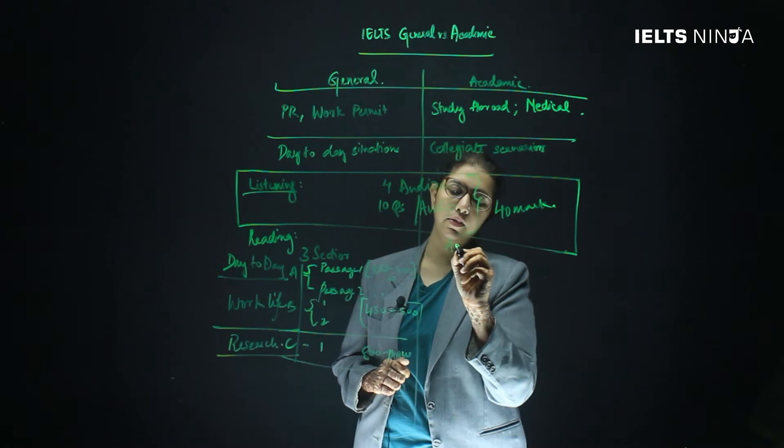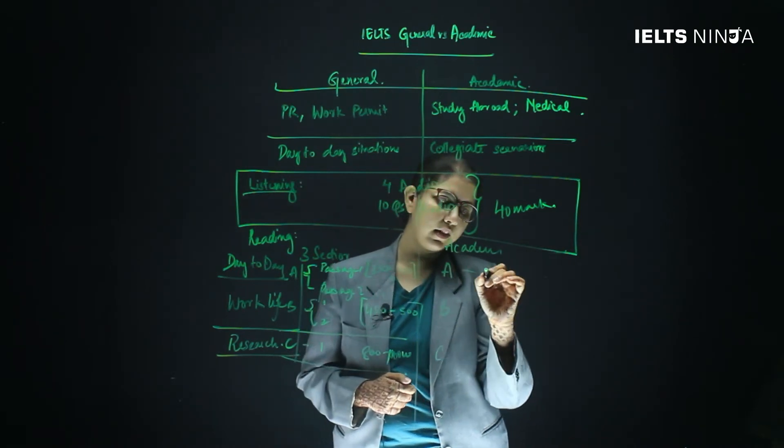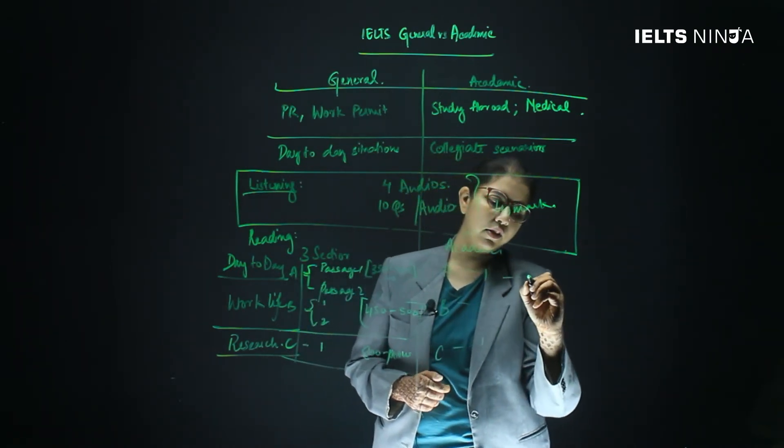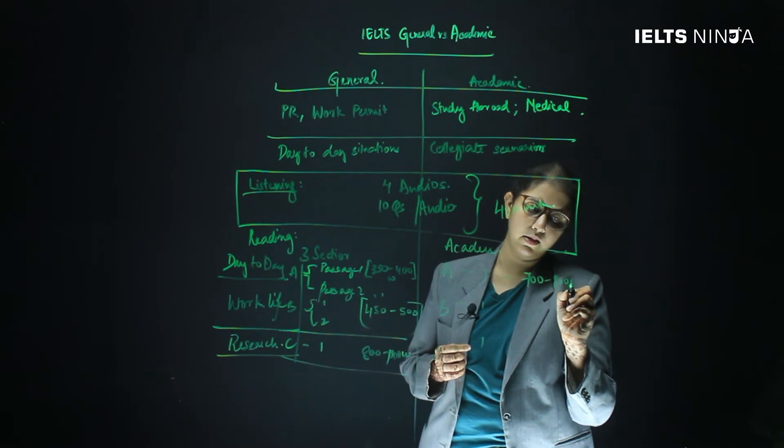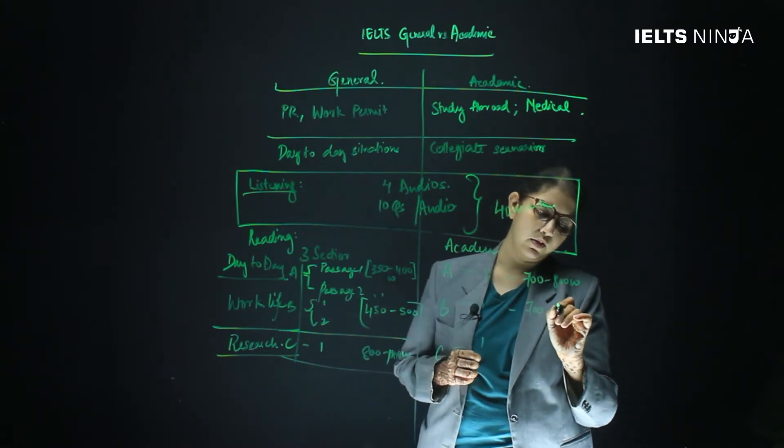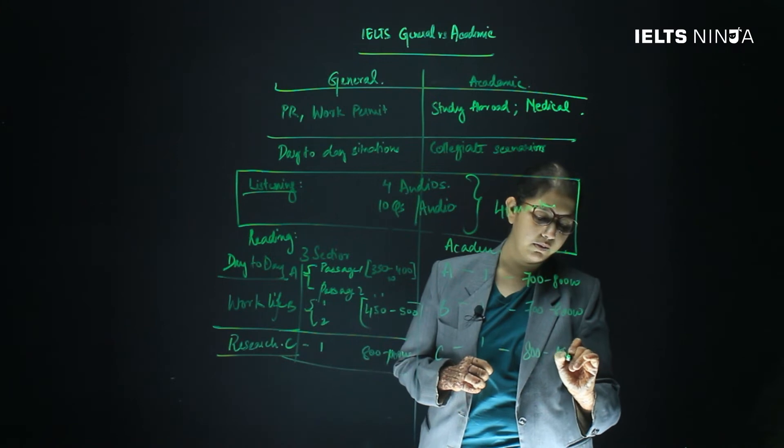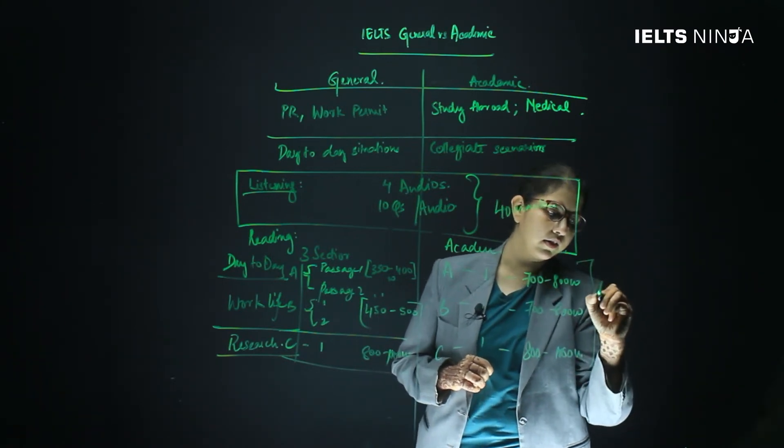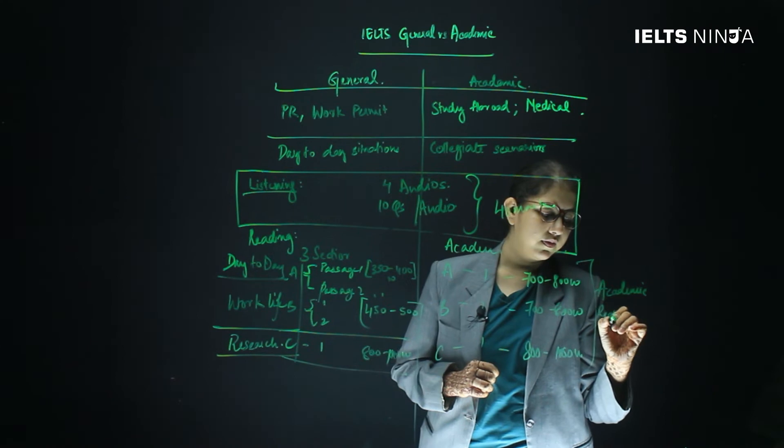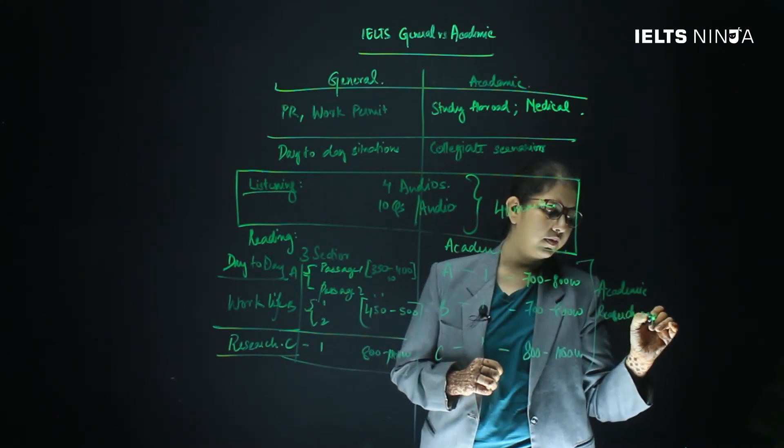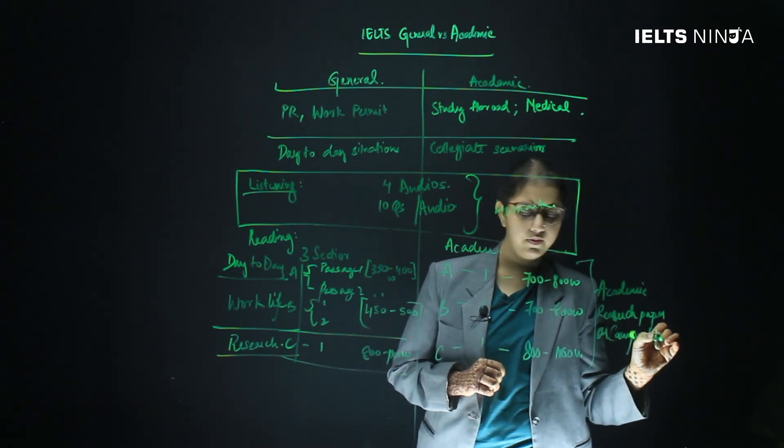Whereas when we come to academic, it also has three sections, A, B, and C. But all the three sections have one passage. The first section A and B will have a passage that is around 700 to 800 words long. Whereas section C is going to have a passage that is longer than 800 to 1000 words long. Now the scenario here is usually from academic research papers or campus life.